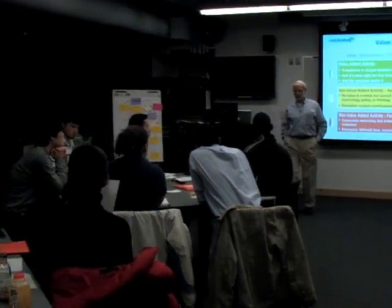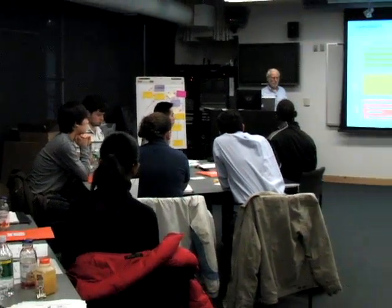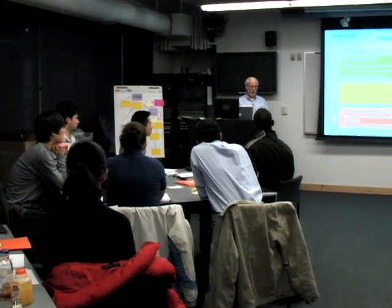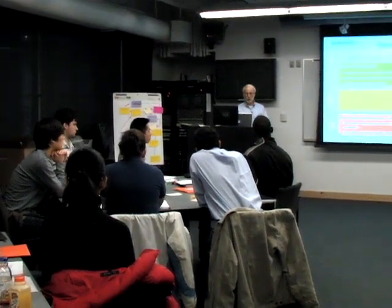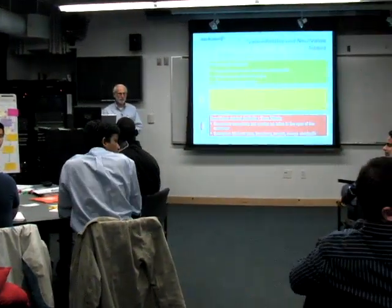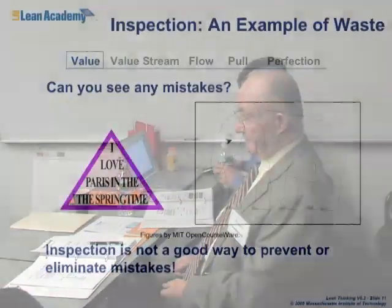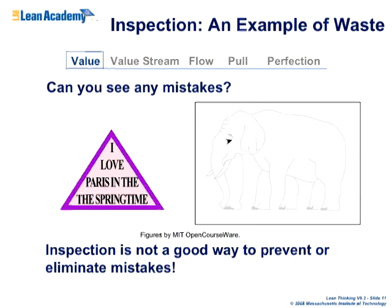A good question is whether inspection is value-added. If it catches a mistake you could say it was value-added, but if you have the process right, maybe you don't need to inspect. A good example is filling out time cards for payroll — American Airlines doesn't care about that. If they bought the airplane for $125 million, that's all they're writing a check for. But if you're going to get paid, you have to fill out a time card. An inspection by itself doesn't add value.